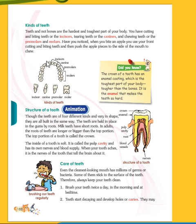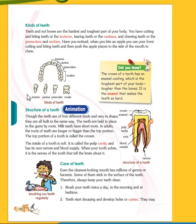You see here this is the structure. These are known as the incisors. The side teeth are the canines. Then premolars and molars — molars are the back teeth, the daad. So the different kinds of the teeth are: incisor teeth, canine teeth, premolars, and molar teeth. Now we will see the structure of the tooth.